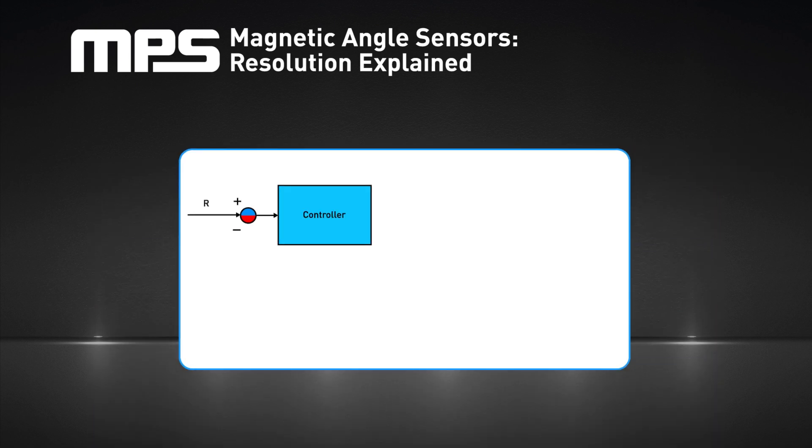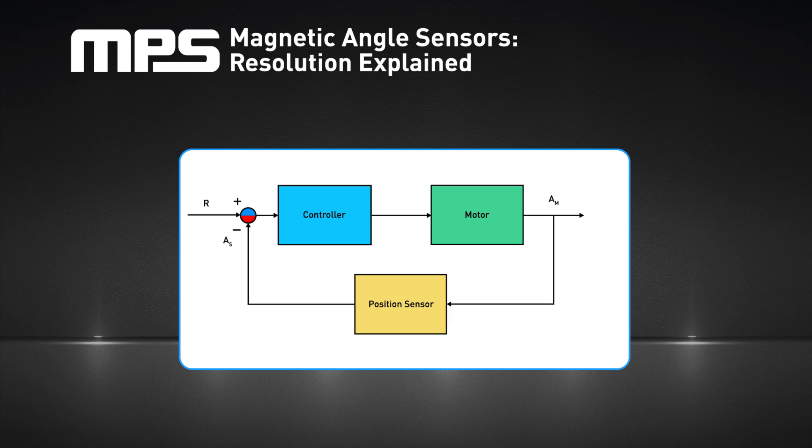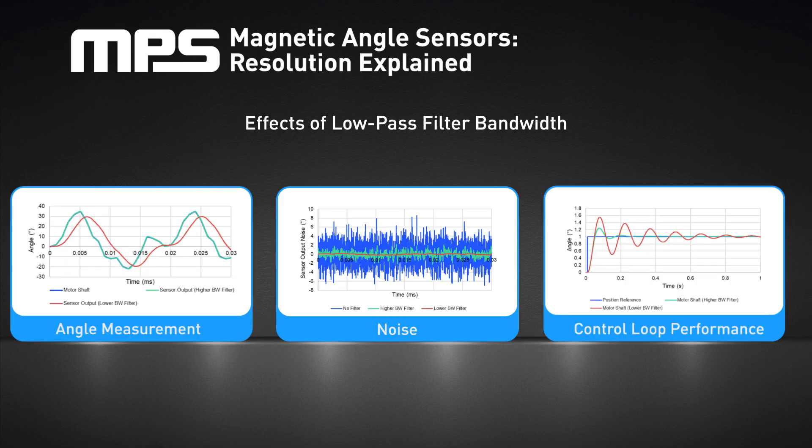A bandwidth that is too low for an application can have dramatic effects. If the sensor is used inside a control loop, the system may be unstable, and the motor may exhibit oscillations, noise, and or loss of efficiency. In this figure, R is the position reference, AM is the motor shaft angle, and AS is the sensor output. A common design rule is to have the filter bandwidth be at least 10 times larger than the bandwidth of the control system or control loop. These figures show the effects of a low-pass filter bandwidth on the angle measurement, the noise, and the control loop performance, respectively.